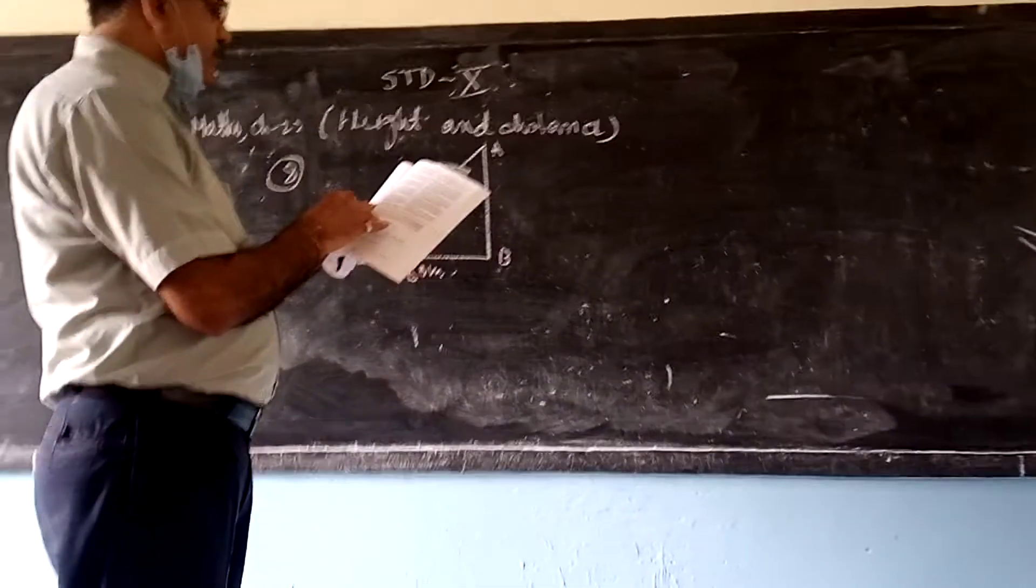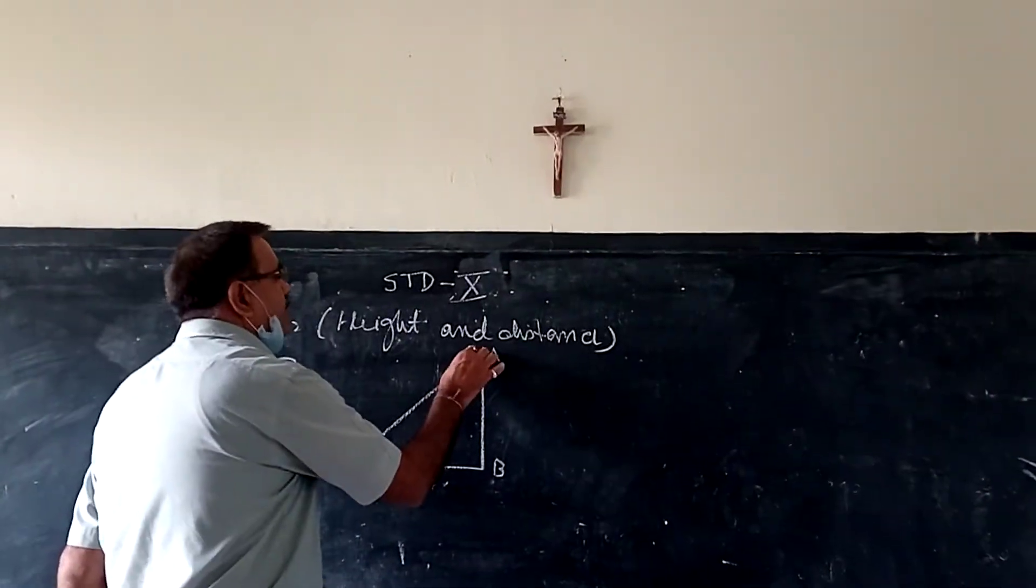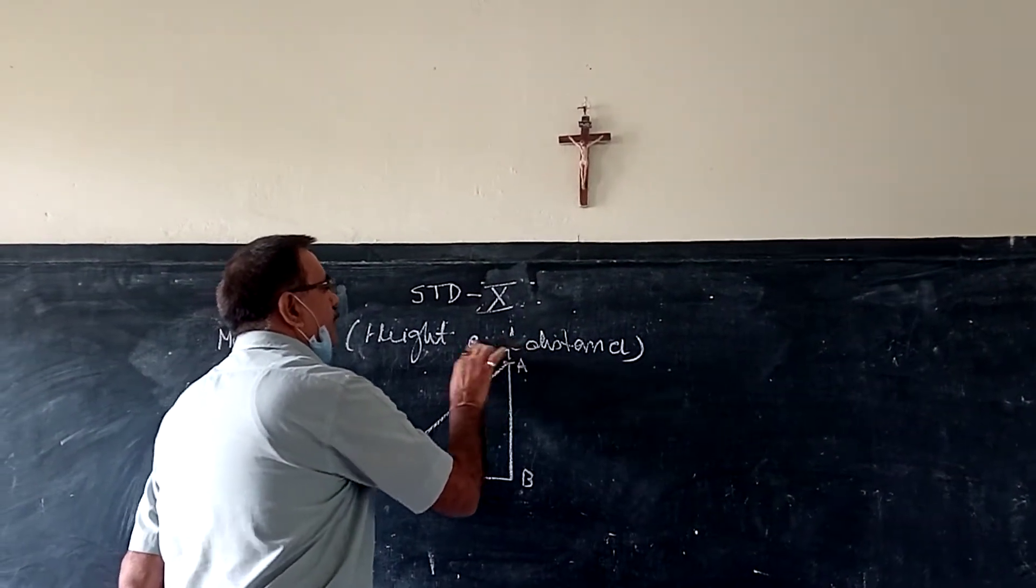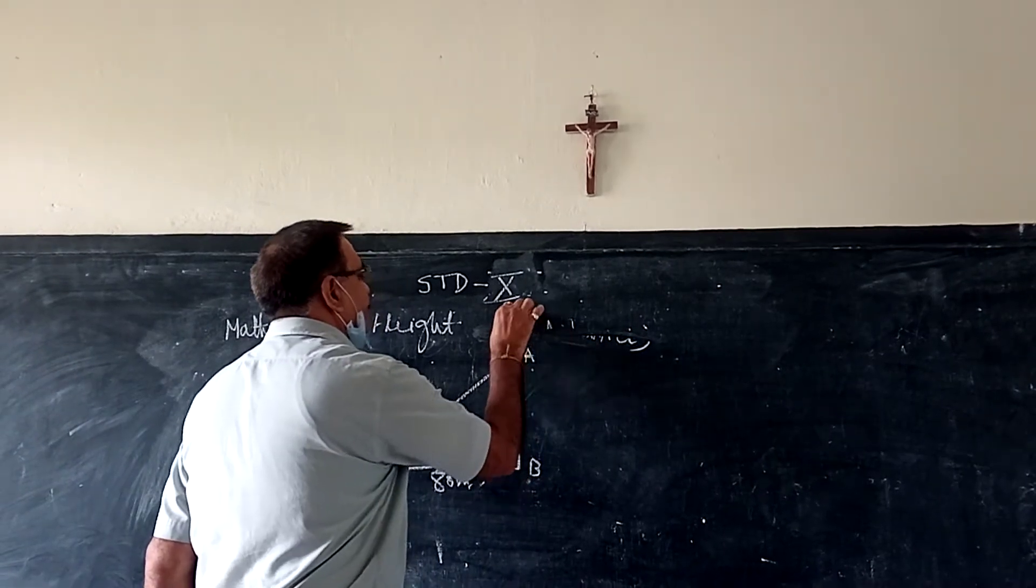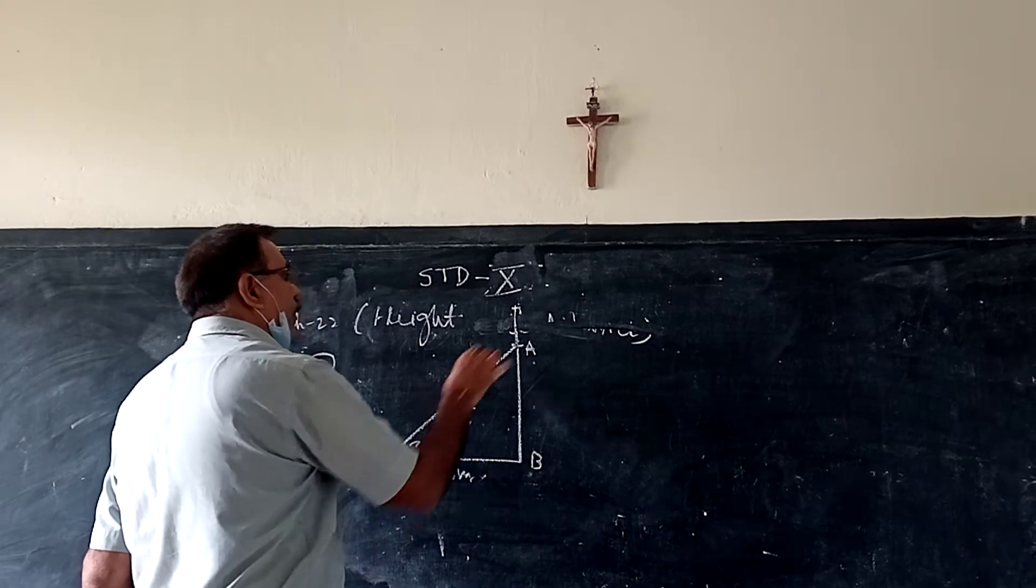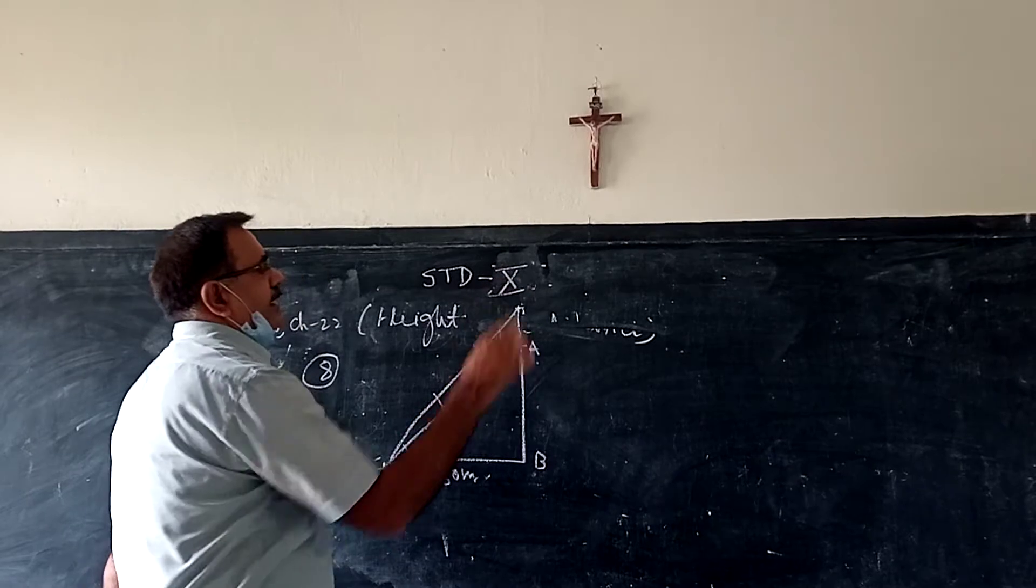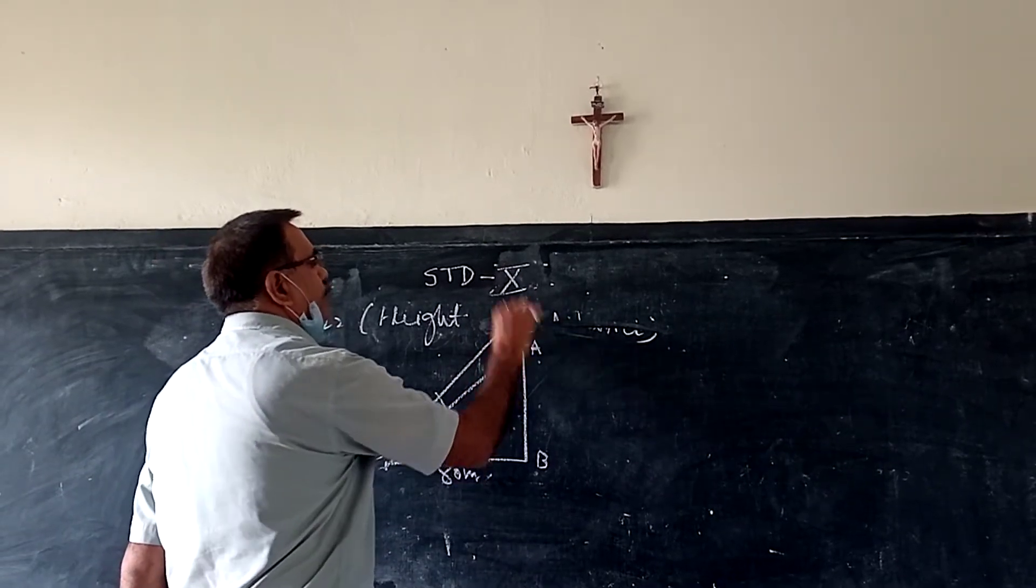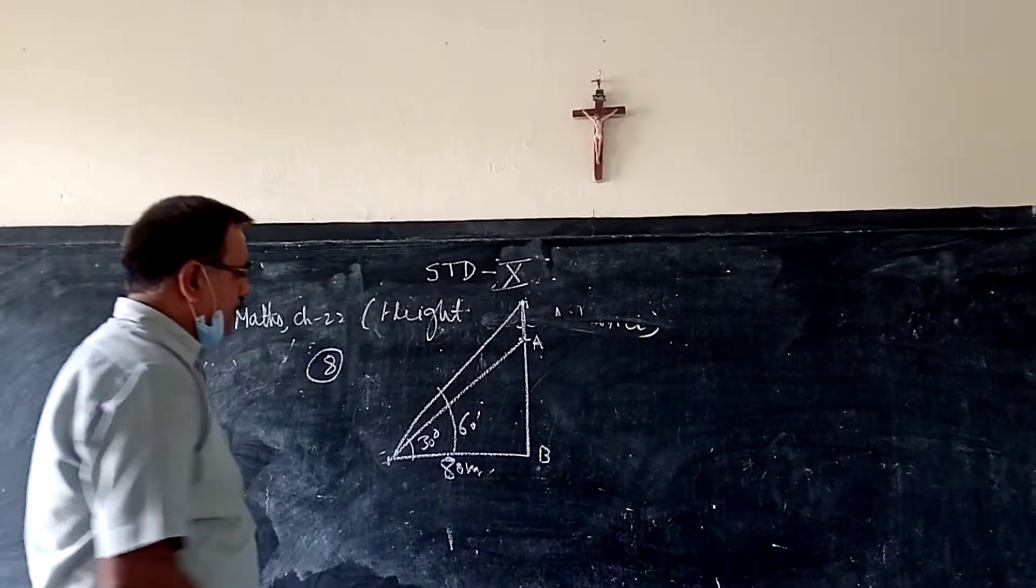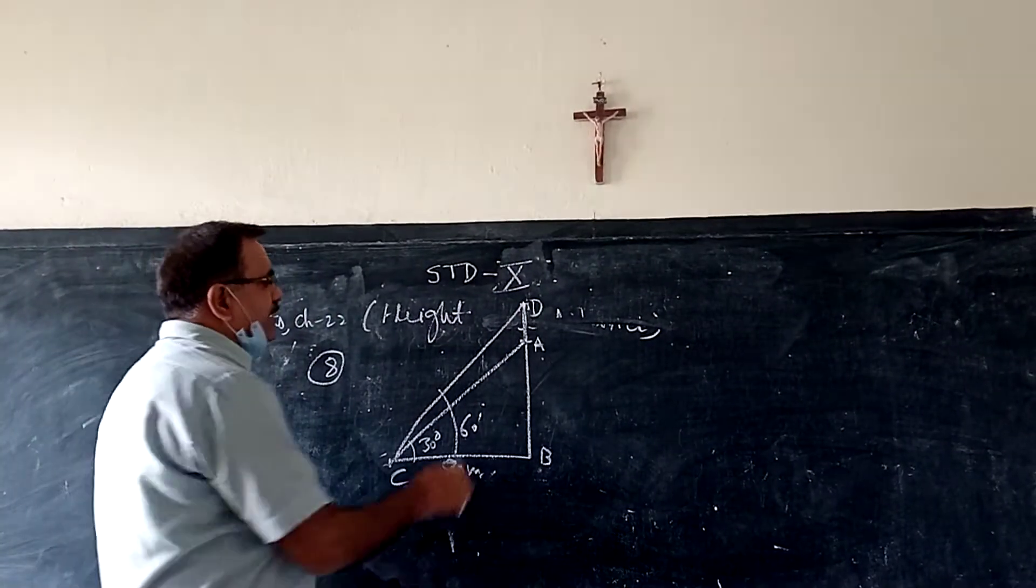How much higher must the tower be raised so that the angle of elevation at the same point may be 60 degrees? Suppose this is the height up to this point. So that from this same point the angle of elevation will be 60 degrees. This is the right angle. Do you follow?